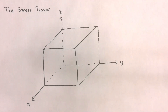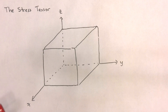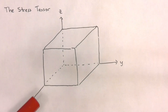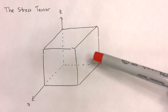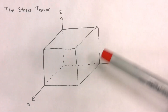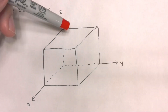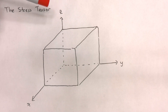Let's start by considering a cube-shaped fluid element with faces in the x, y, and z directions. We will identify the x-face as the face that is normal to the x-axis, the y-face as the face that is normal to the y-axis, and the z-face as the face that is normal to the z-axis.